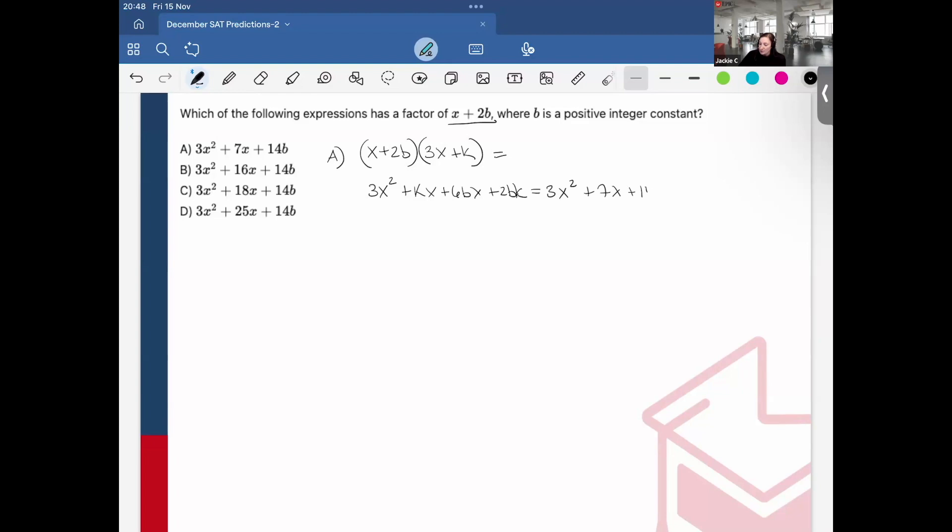When I expand, I would get 3x² + kx + 6bx + 2bk. We can see 3x² correlates to 3x². I can factor out the x: (k + 6b)x. In this case, this equals 7. And then 2bk = 14b. I can easily solve for k: divide each side by 2b, k = 7. And then k + 6b = 7. I know k is 7, so 7 + 6b = 7, 6b = 0, b = 0. That doesn't work because it's not a positive integer constant.